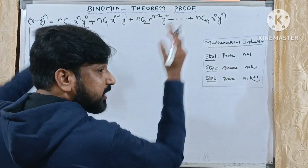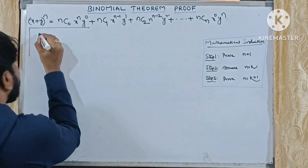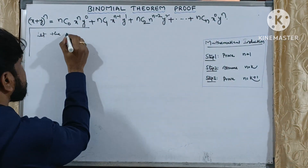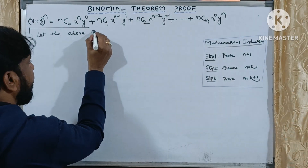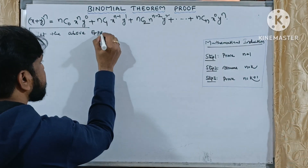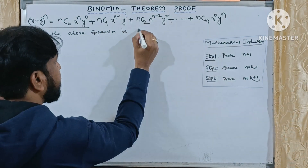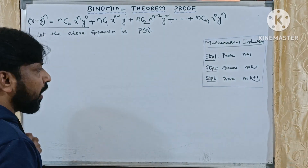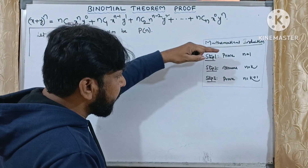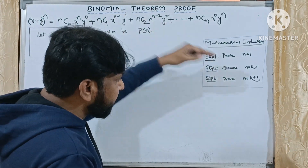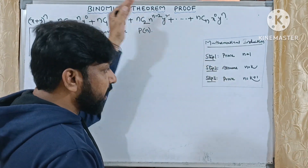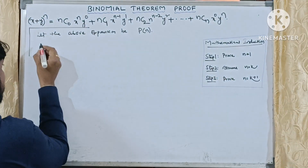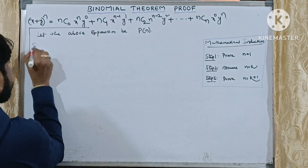Let the given expansion be called P(n). Our target is: P(n) is true for n = 1, P(n) is an assumption for n = k, and P(n) is true for n = k + 1. So step one: P(n) is true for n = 1.